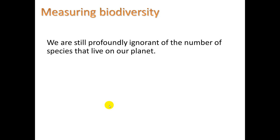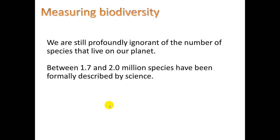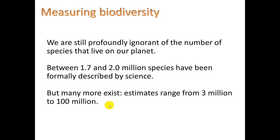For measuring biodiversity, we're still profoundly ignorant of the number of species that live on our planet. We know that about 1.7 to 2 million species have been formally described by science, but many more exist. Estimates range from 3 million to 10 to 100 million, so we really only know a few percent of the species we think are out there — including various types of microorganisms in soil, and all the different microorganisms in the ocean, of which we've explored only a very small percent.